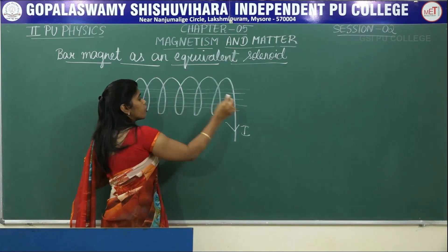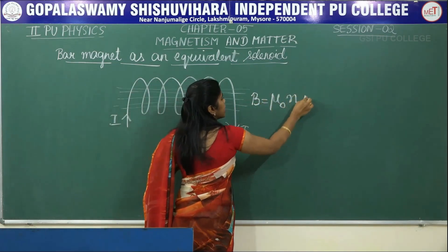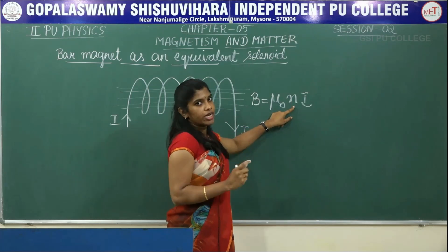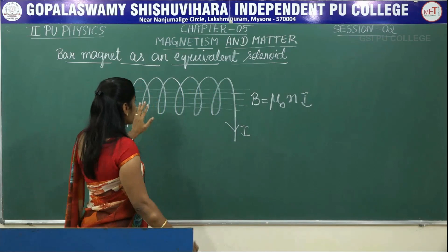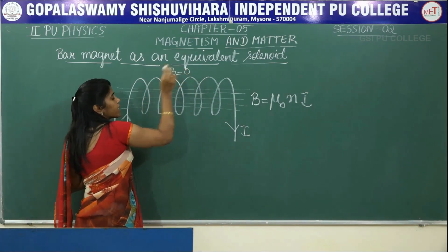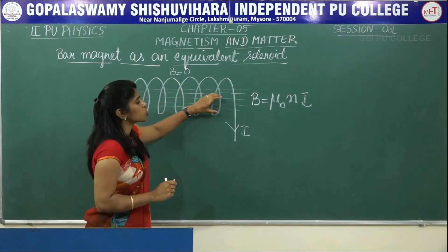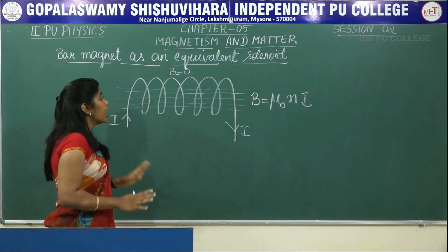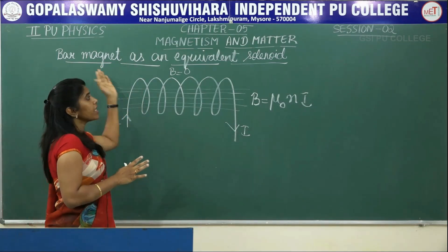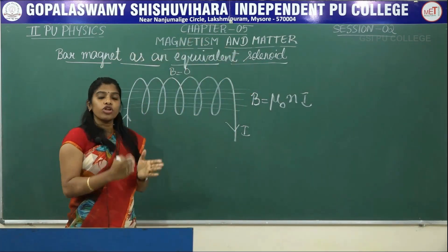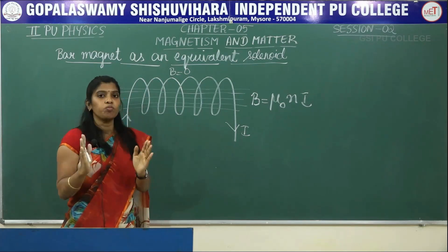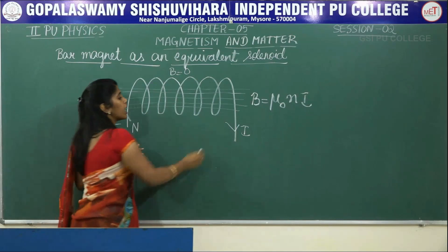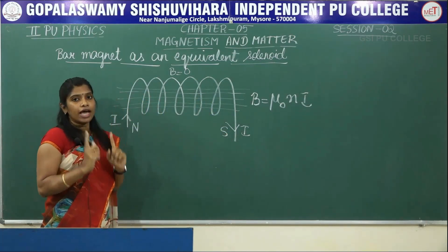The magnetic field inside the solenoid is given by B = μ₀ni, where μ₀ is the absolute permeability, n is the number of turns per unit length, and i is the current in the solenoid. Outside the solenoid the magnetic field is zero — it is stronger inside and becomes zero as we come outside. The solenoid also has two poles: one end is considered north pole and the other end south pole, depending on the direction of the current — just similar to a bar magnet.